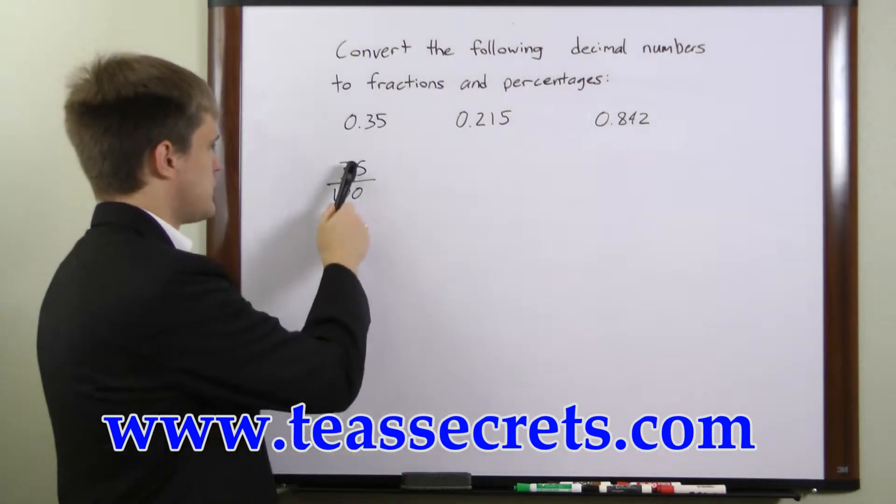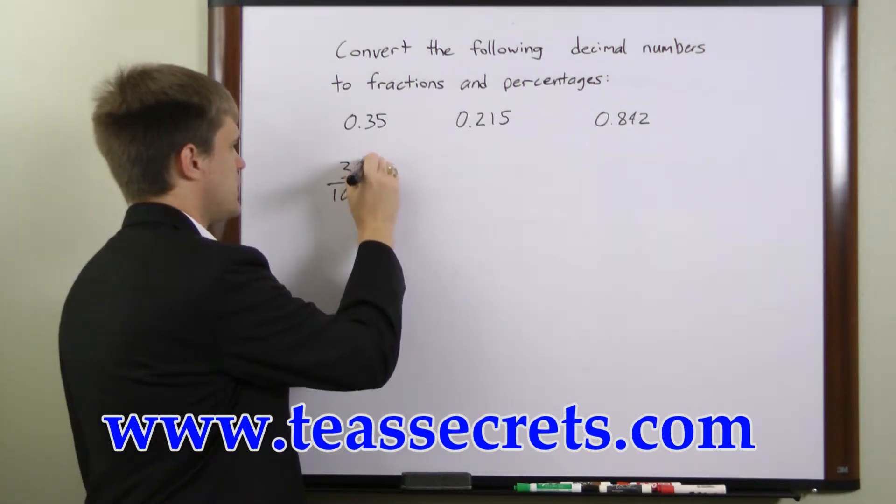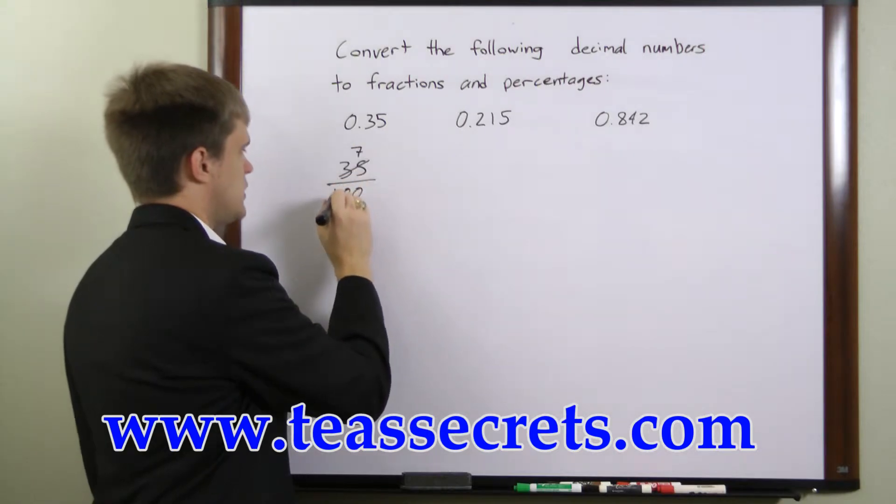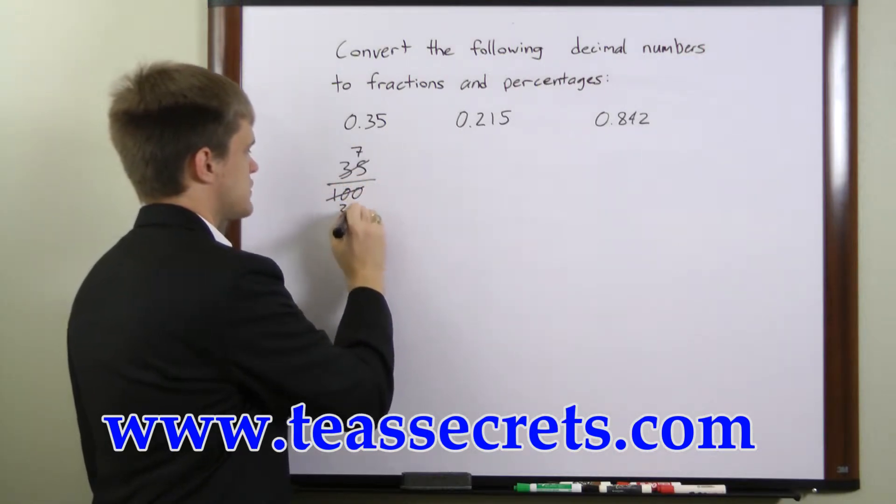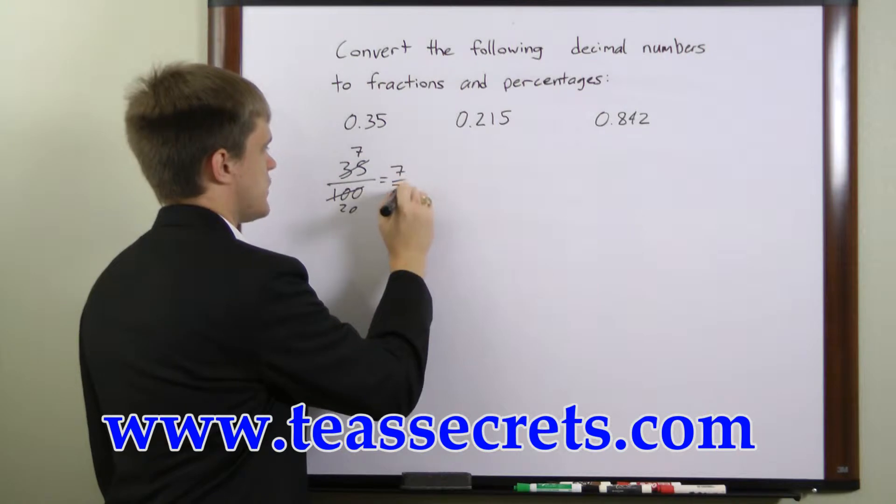This can be reduced by dividing both the top and the bottom by 5. 35 over 5 is 7. 100 over 5 is 20, so this is equal to 7 over 20.